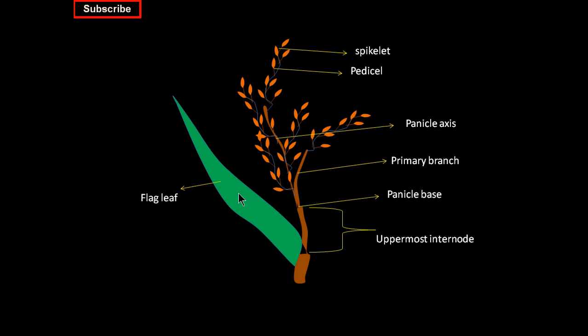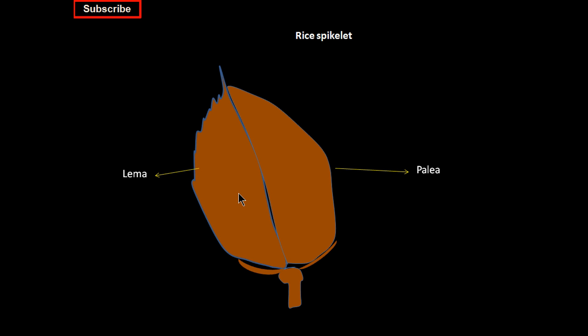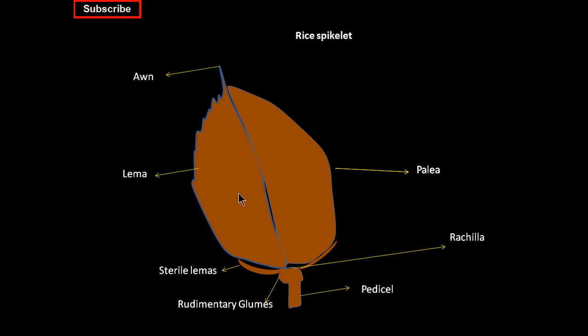If you take a single spikelet of rice, the spikelet itself has different components like lemma and palea. The lemma has one special structure — the awn. This awn may be short, medium, or large depending on the different species. Besides that, there are other structures like pedicels, rudimentary glumes, sterile lemmas, and rachilla. These are all the outer components of the rice spikelet.